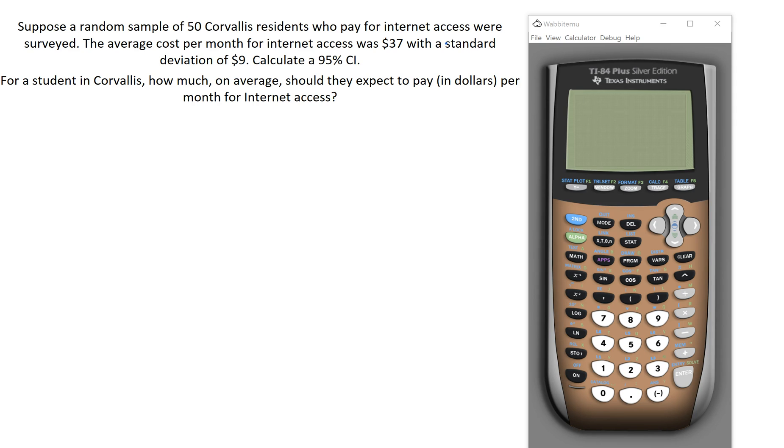First, we want to list out the values we need. We need X-bar, which is our sample mean. X-bar in this example equals $37. S, our sample standard deviation, is $9. We're doing a 95% confidence interval, so our confidence level is 95% and our sample size is 50.